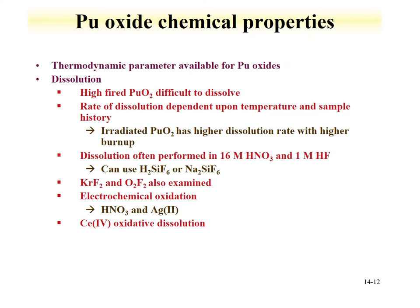For the nuclear fuel cycle, an important consideration is dissolution. Any high-fired plutonium dioxide is difficult to dissolve — this has an implication for MOX fuel that has been burned and recycled multiple times. The dissolution of plutonium dioxide is dependent upon temperature and sample history. Irradiated dioxide has a higher dissolution rate with higher burn-up. Dissolution can often be performed with the addition of HF, other stronger oxidizing agents, electrochemical oxidation, or with the use of cerium.